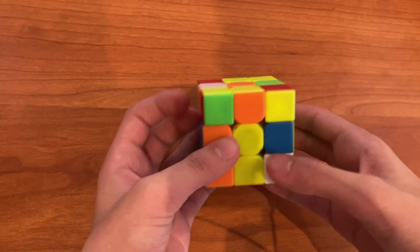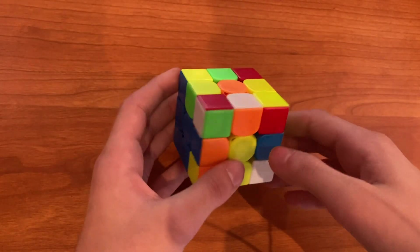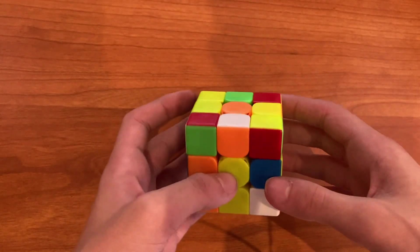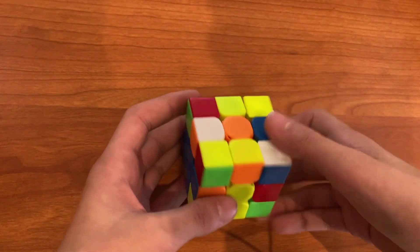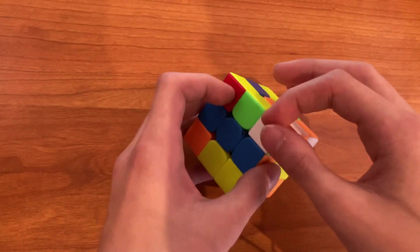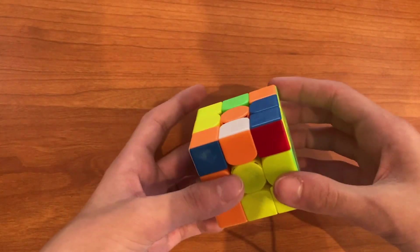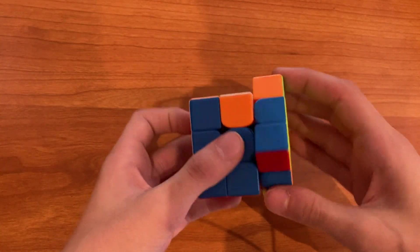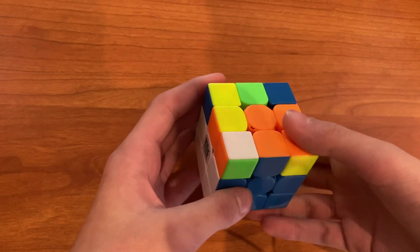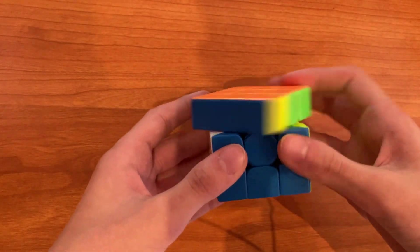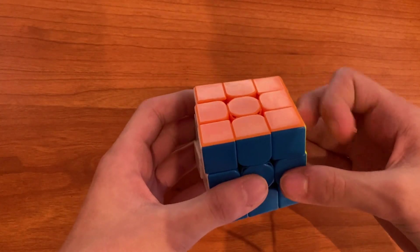As you can see this edge is solved, so all we need to do to pseudo slot is to solve corner. So he just solves this one like this. And then he does a D prime, and then he pairs up this with pseudo F2L. And then it gives him a very easy case for the last pair, so he does a sledge. And then he gets a very easy OLL, and then a J perm with a U2 AUF.